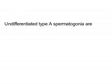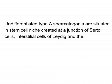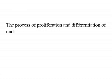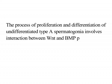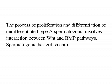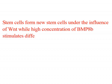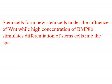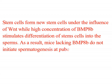Undifferentiated type A spermatogonia are situated in a stem cell niche created at the junction of Sertoli cells, interstitial cells of Leydig, and blood vessels. The proliferation and differentiation of undifferentiated type A spermatogonia involves the interaction between Wnt and BMP pathways. Stem cells form new stem cells under the influence of Wnt, while high concentration of BMP8B stimulates differentiation of stem cells. Mice lacking BMP8B do not initiate spermatogenesis at puberty.